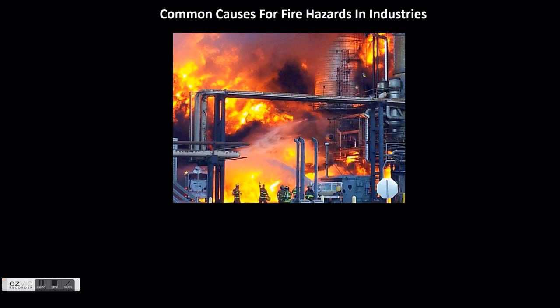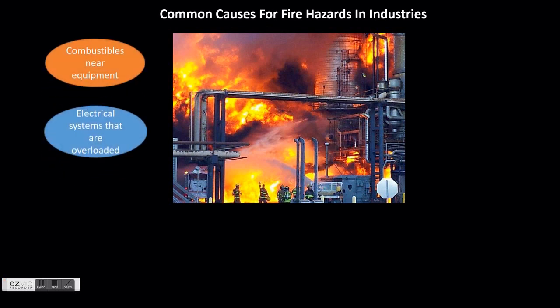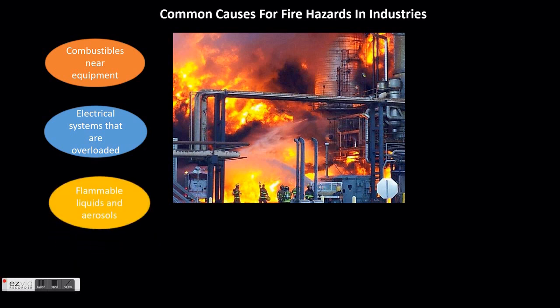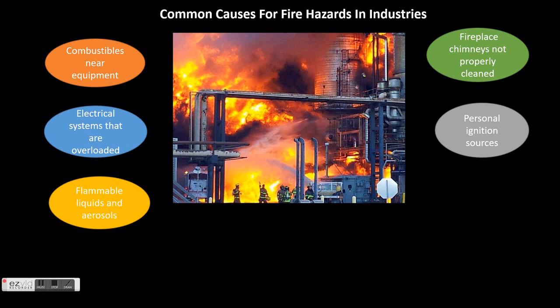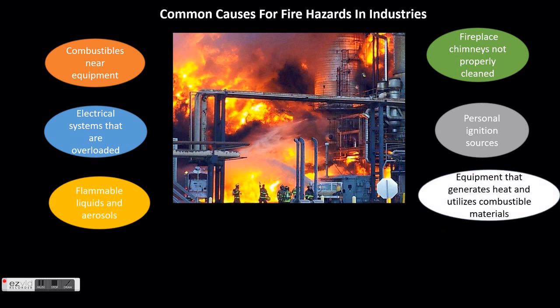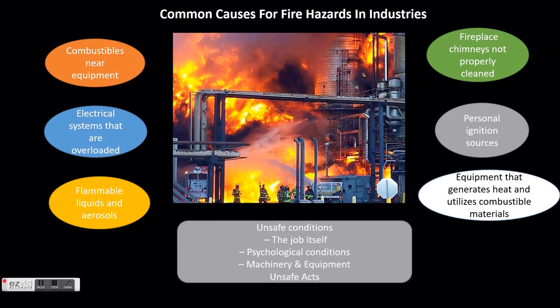Causes of industrial fire accidents: combustibles near equipment that generates heat, flame, or sparks; electrical systems that are overloaded, resulting in hot wiring or connections; flammable liquids and aerosols; fireplace chimneys not properly or regularly cleaned; personal ignition sources like matches and lighters; and equipment that generates heat and utilizes combustible materials.